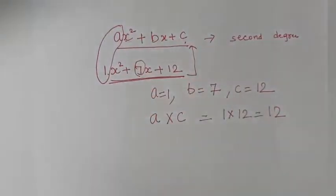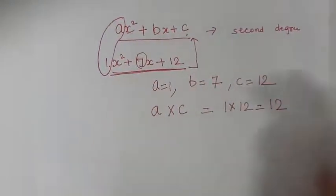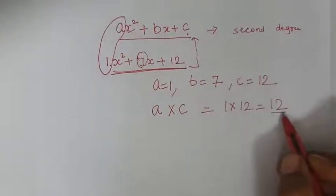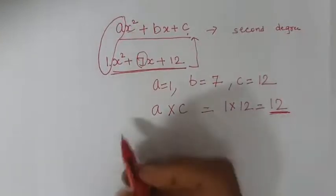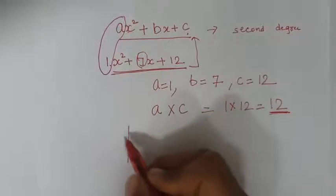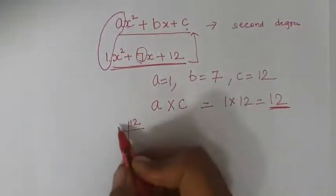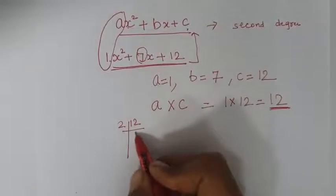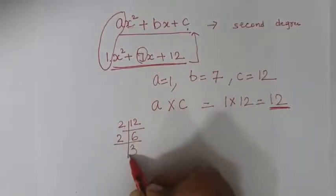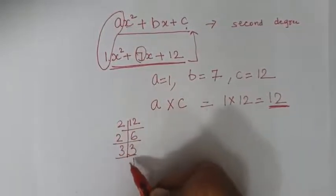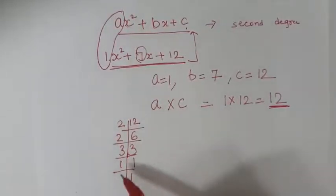Now think of two numbers whose multiplication gives you 12 and whose addition gives you 7. The easy way: find the factors of 12 first. The factors are 2, 6, 2, 3, 3, 1, and 1.